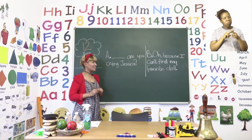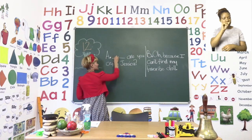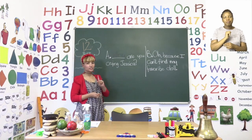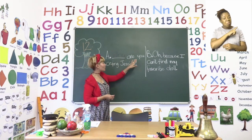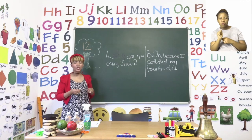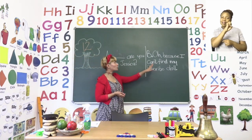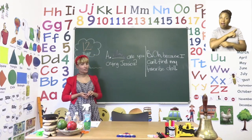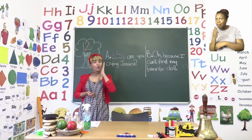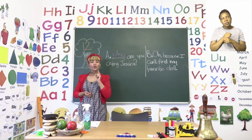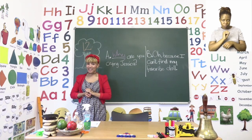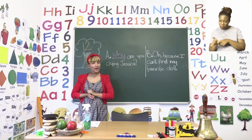It's 'Why.' That's right, everyone. We can say 'Why.' Let's read the question again: 'Why are you crying, Jessica?' The question asks why, and why is Jessica crying? Because she can't find her favorite doll. Now remember, in order to complete all the sentences in the first column, you have to look at all the question words on top as well as the answers on the other side — that will help you find the right question word.